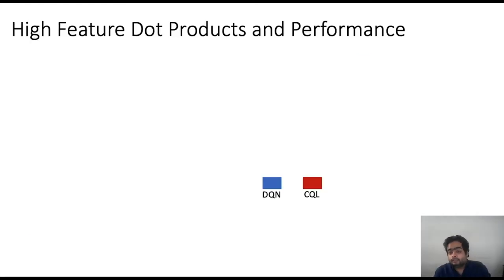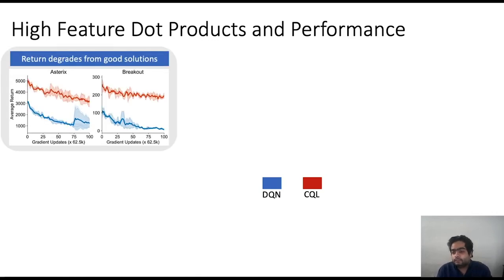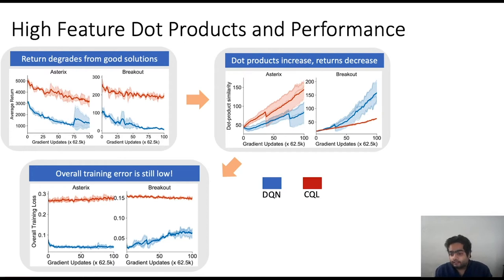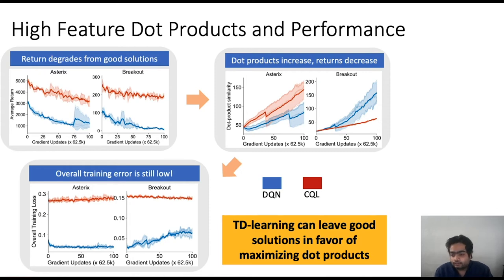To empirically understand how high feature dot products correspond to poor performance, we run two offline algorithms, DQL and CQL, initialized from a good solution and track the trajectory found by TD learning. We find that the return of the policy degrades even when starting from good solutions, and dot products tend to rise as more training progresses — all while the overall training error for both algorithms remains low or decreasing.